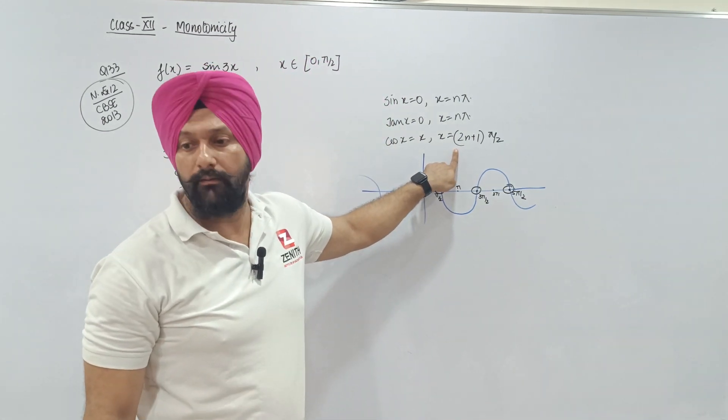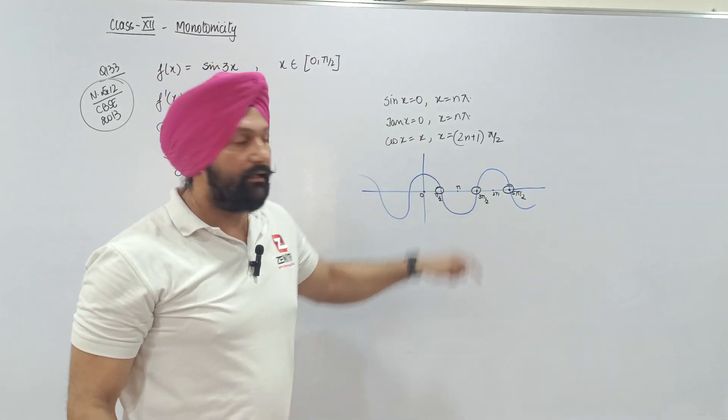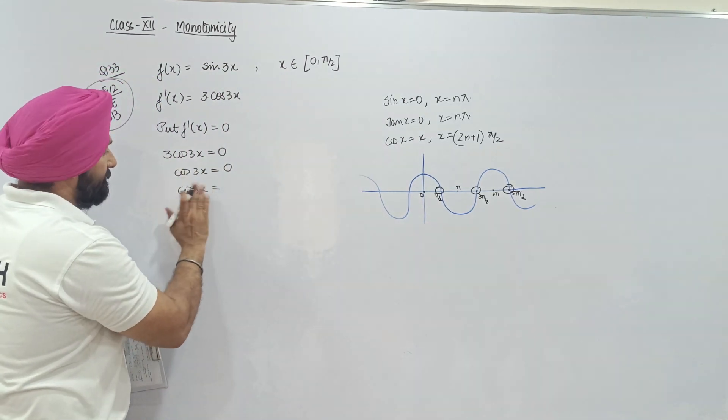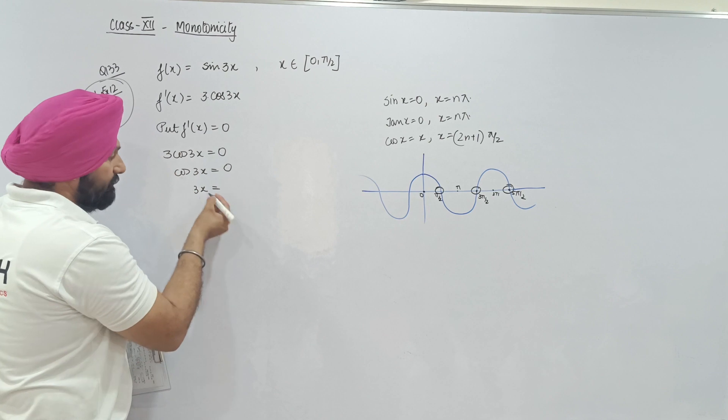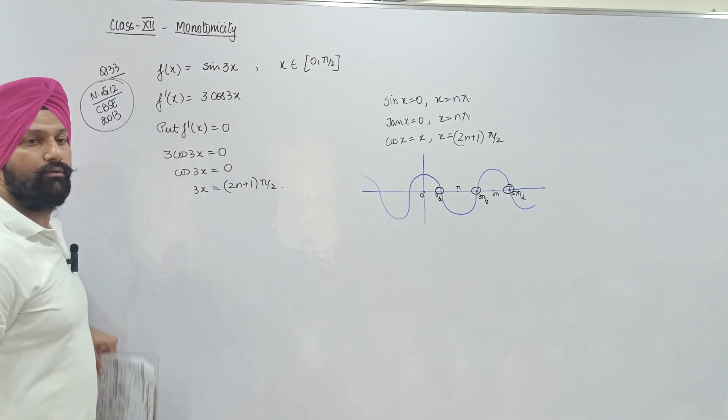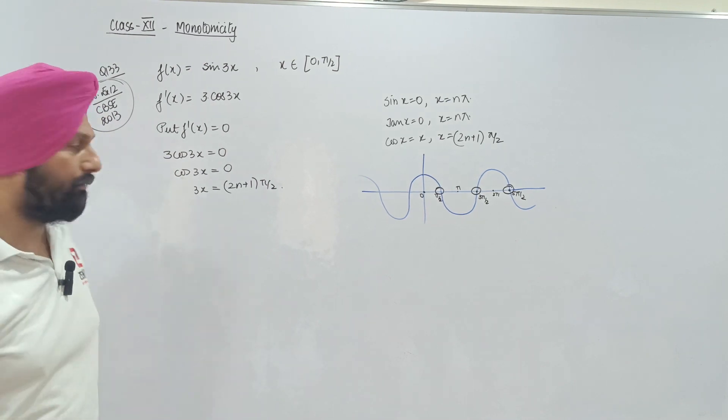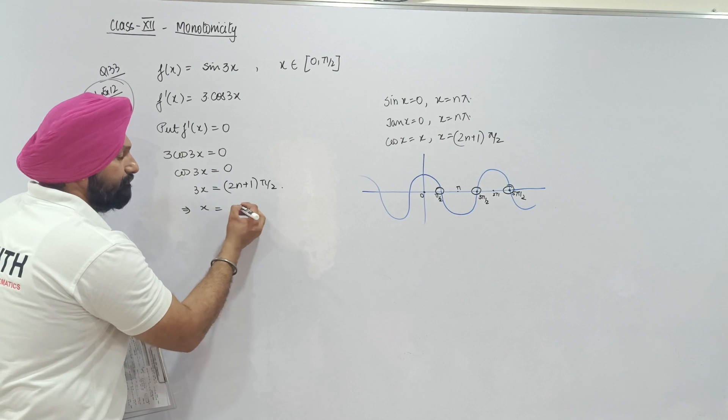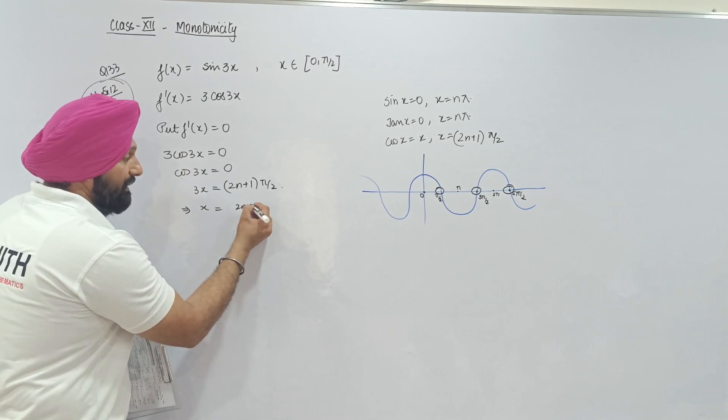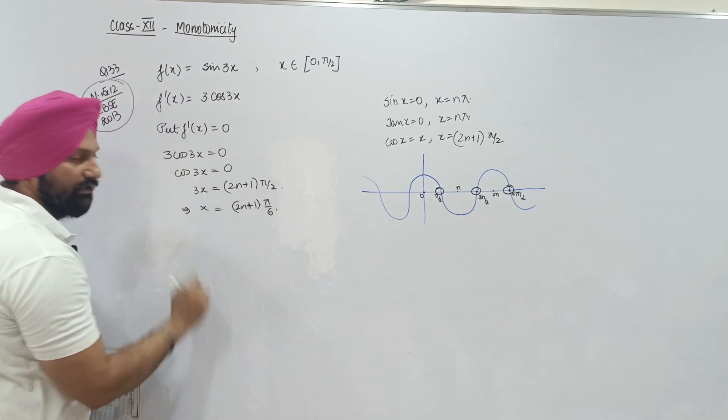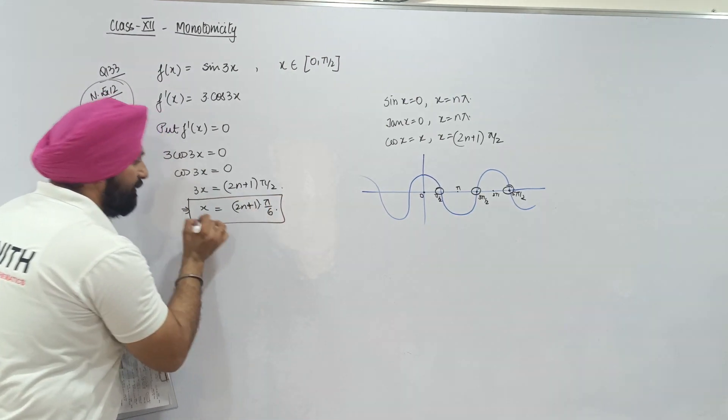(2n+1) into π/2. This time 3x, so 3x equals (2n+1) into π/2. Therefore x equals (2n+1) into π/6, 3x divided by 3 gives x value.